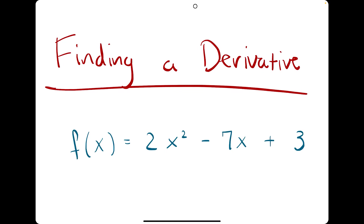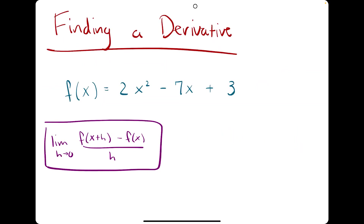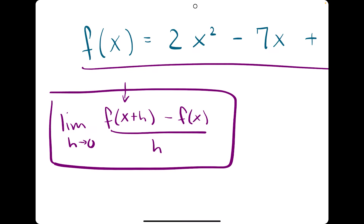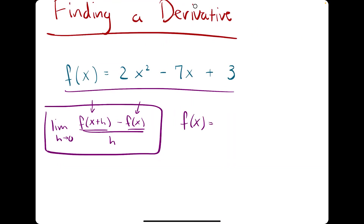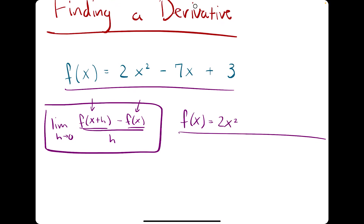Let's talk about finding the derivative of a polynomial function using two methods. The first method uses the formal limit definition of a derivative. The second method uses something known as the power rule. Using the limit definition, let's find the derivative of 2x squared minus 7x plus 3. Looking at this expression, we see f(x+h) and f(x), so our goal is to find these two expressions, plug them in, and calculate the limit. f(x) is already given: 2x squared minus 7x plus 3.